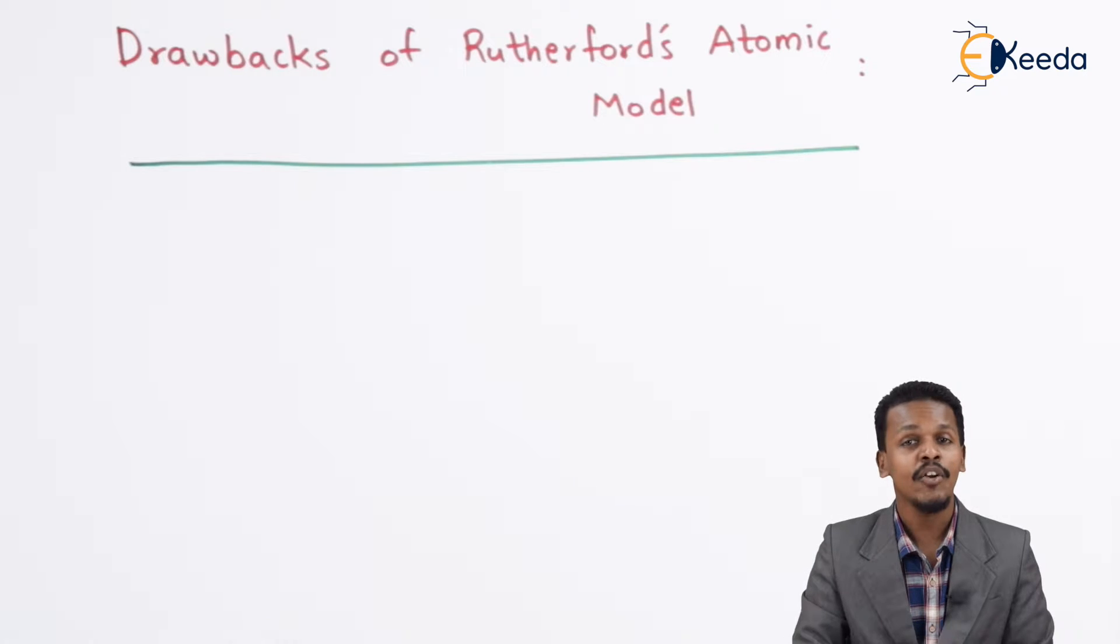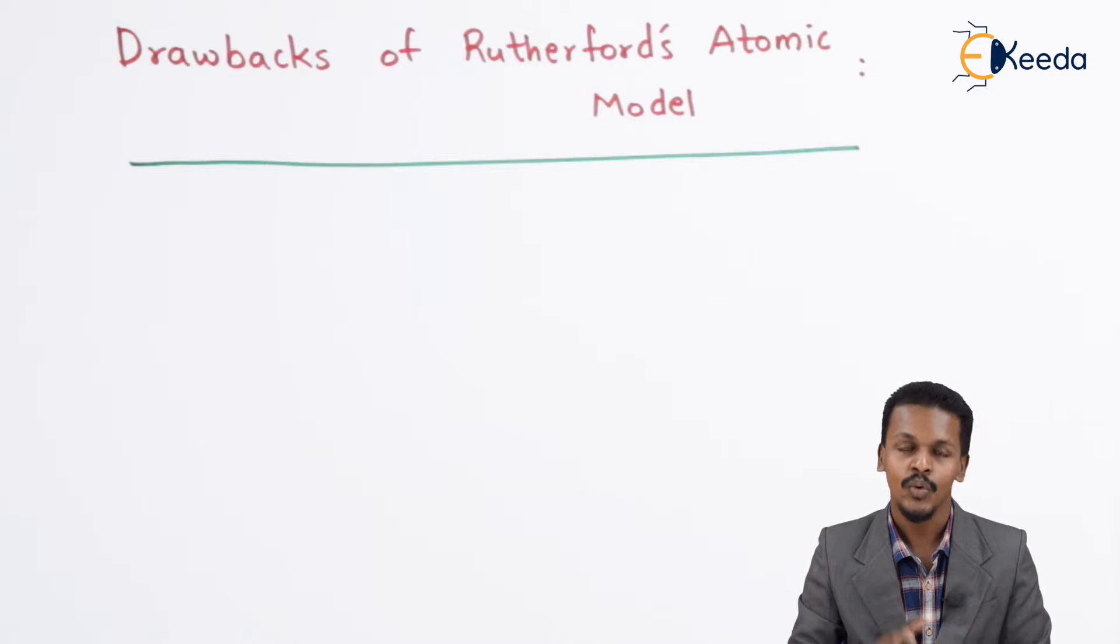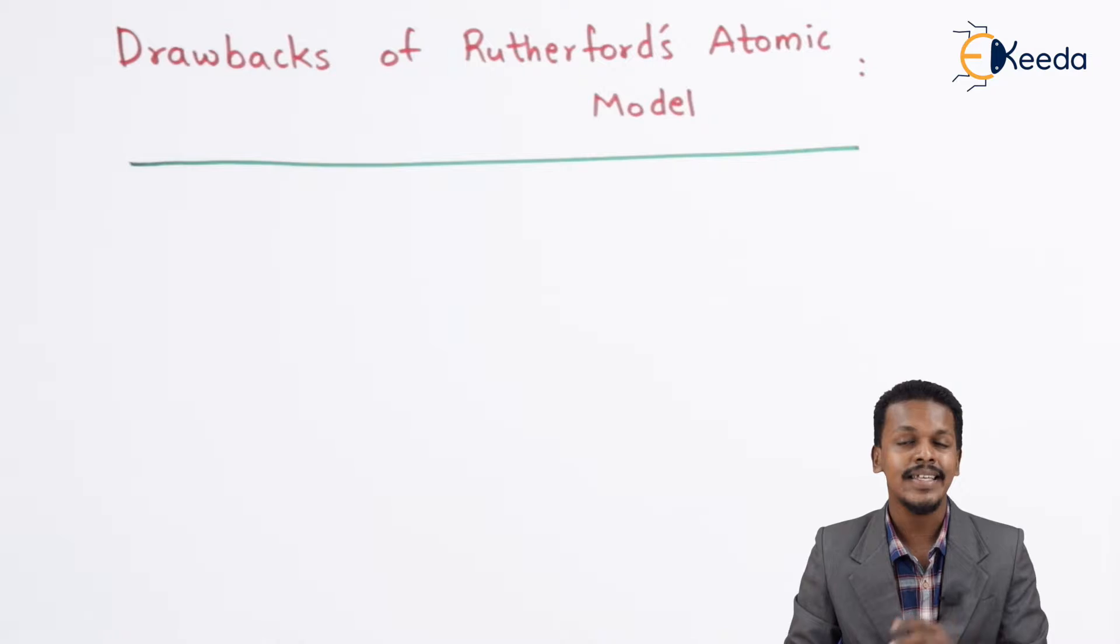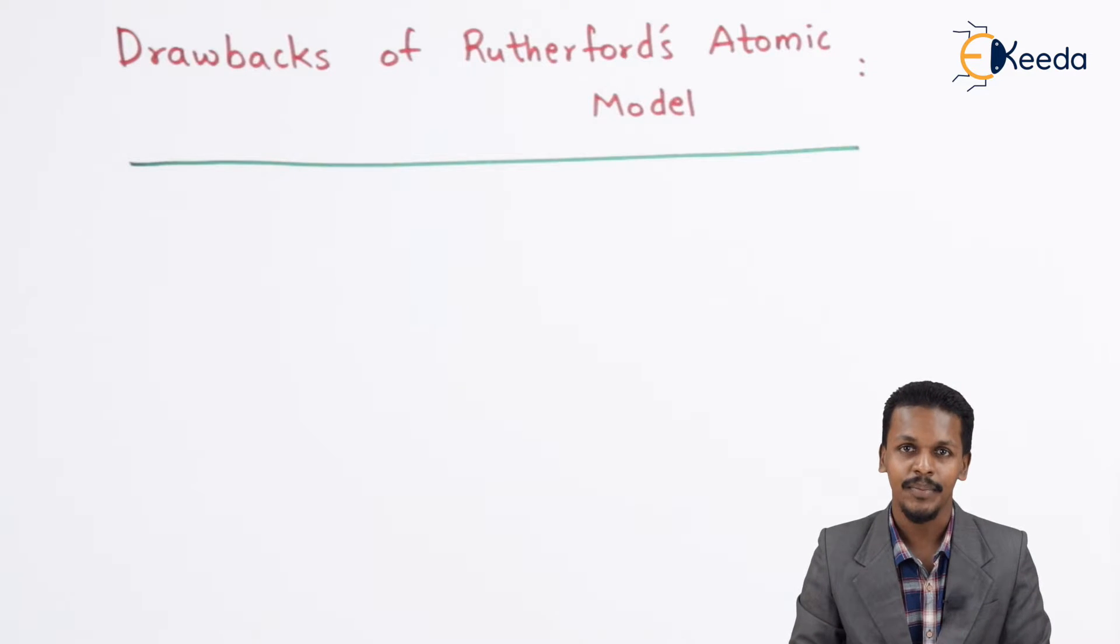But despite giving such popular theories, there are certain drawbacks of Rutherford's model, and that is what I am going to talk about. So what are these? Let me explain this with the help of a diagram.